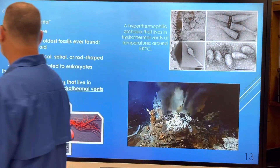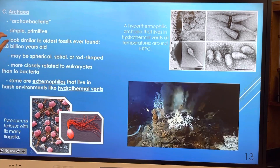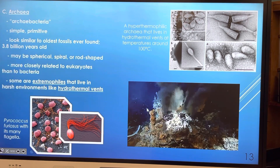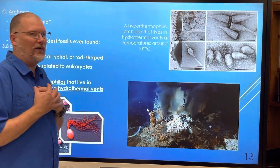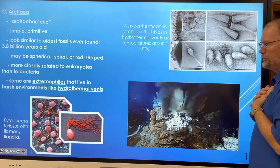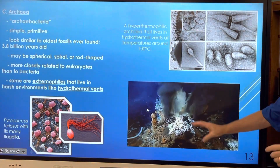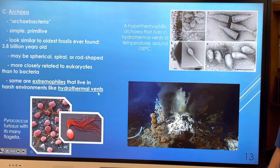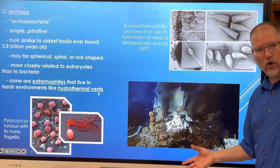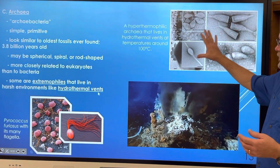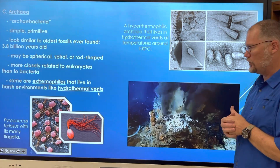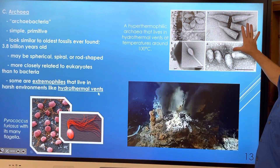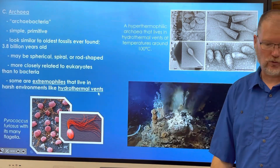Then we have the archaeobacteria — very simple, very primitive. These are also similar to some of the oldest fossils ever found on the planet, over three billion years old. They come in different shapes and are more closely related to eukaryotic cells than other bacteria. Some of them are extremophiles that live by hydrothermal vents — otherwise known as black smokers. That white snow-like material is actually mats of bacteria growing there, forming the basis of the food chain. Some thrive at around 100 degrees Celsius — the boiling point of water.